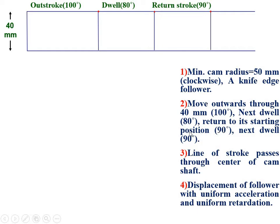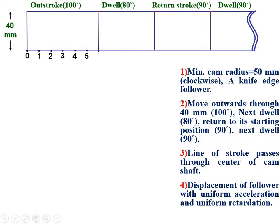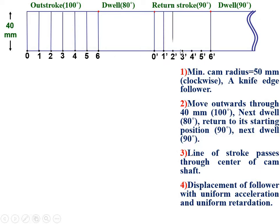Then the return stroke is 90 degrees, so the length of the return stroke line is 9 cm. The remaining dwell period is 90 degrees. If you can't accommodate 9 cm in your sketchbook page, you can use a break symbol. Now divide the out stroke into 6 equal divisions and give the names 0, 1, 2, 3, 4, 5, 6. Draw vertical lines through all these points. Similarly divide the return stroke into 6 equal divisions, naming them 0', 1', 2', 3', 4', 5', 6', and draw vertical lines through all these points.